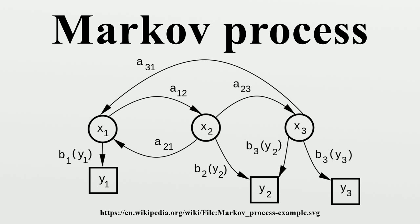In some cases, apparently non-Markovian processes may still have Markovian representations, constructed by expanding the concept of the current and future states. For example, let x be a non-Markovian process. Then define a process y such that each state of y represents a time interval of states of x. Mathematically, this takes the form of a specific construction. If y has the Markov property, then it is a Markovian representation of x. An example of a non-Markovian process with a Markovian representation is an auto-regressive time series of order greater than one.